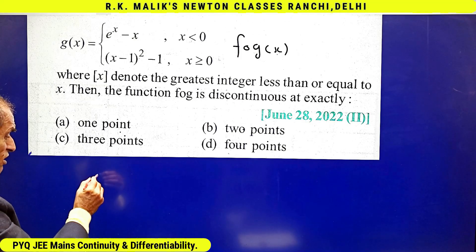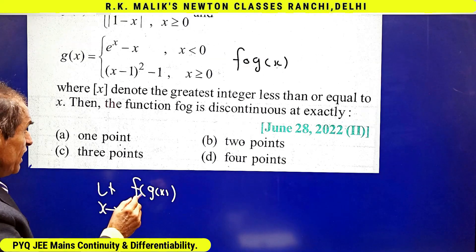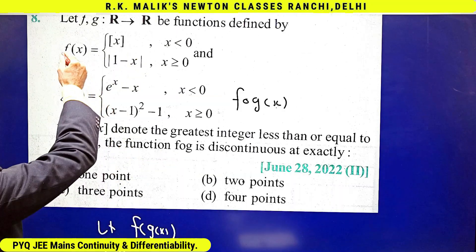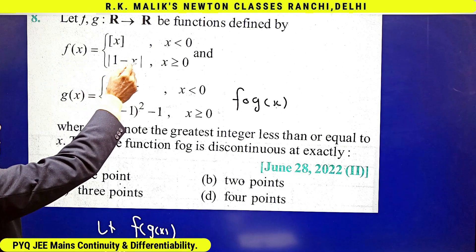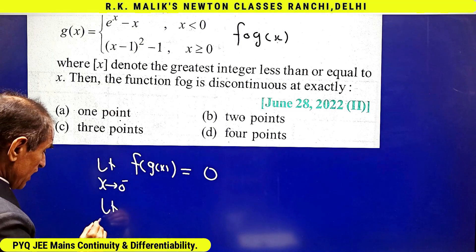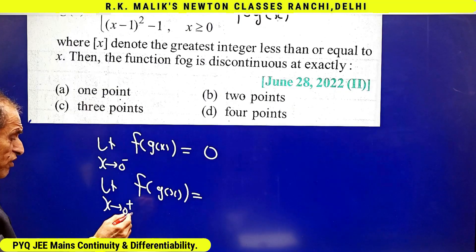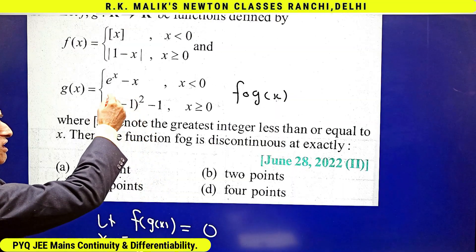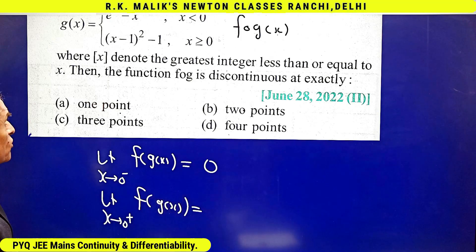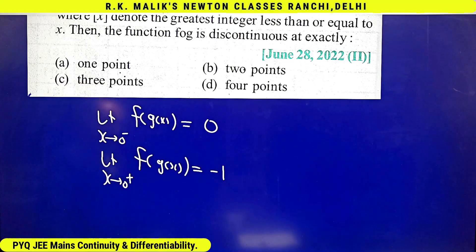Now let us check continuity at x = 0. The left-hand limit: as x tends to 0 from the left, g(x) is near 1, and when the argument is near 1, f gives value 0, so the LHL is 0. For the right-hand limit: as x tends to 0 from the right, g(x) is slightly less than 1, making it slightly less than zero, and f of a value slightly less than zero gives minus 1. Since LHL ≠ RHL, the function is discontinuous at x = 0.